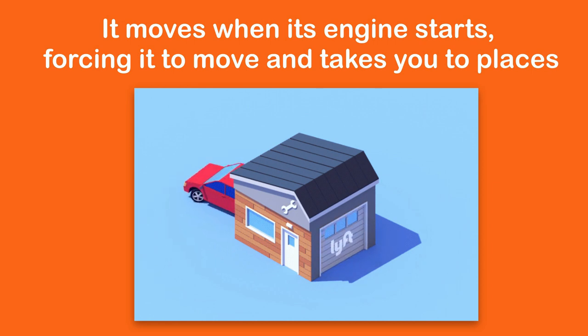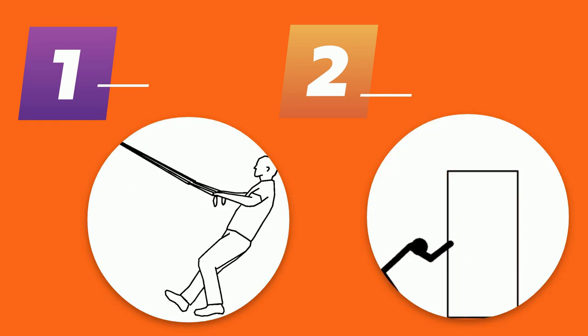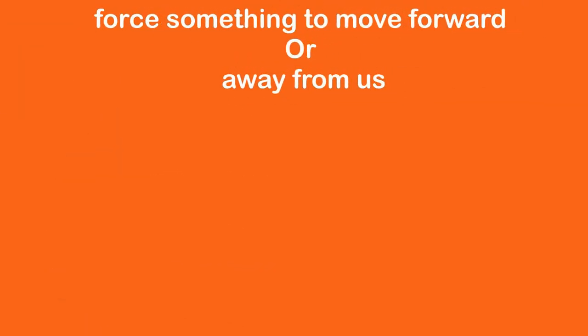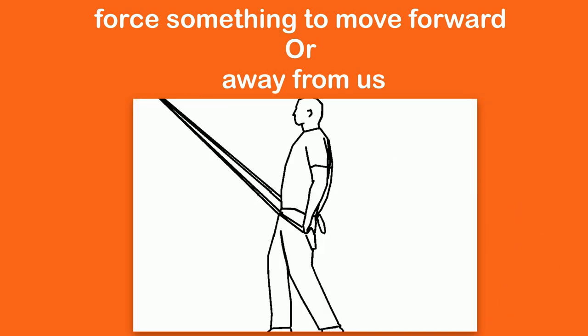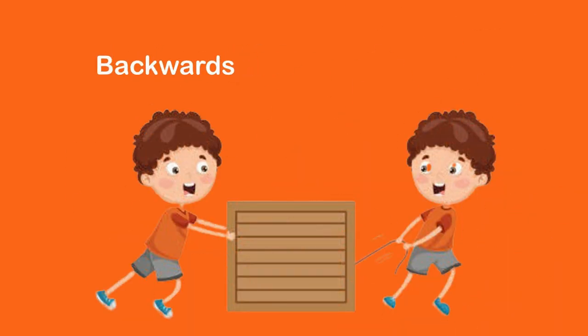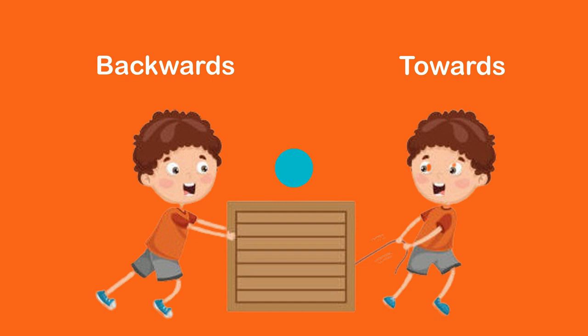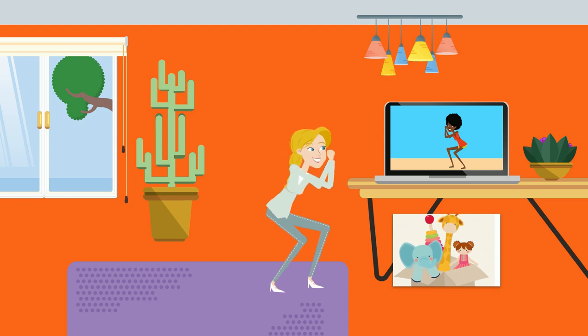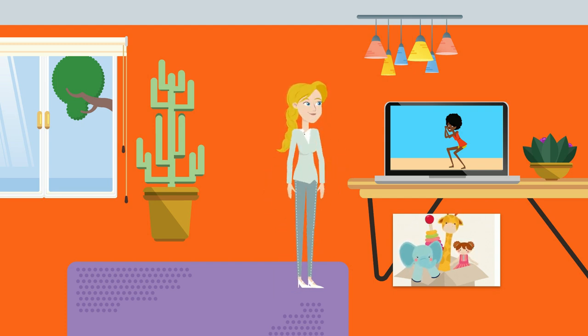Forcing it to move takes you to places. There are two types of forces: push and pull. When we force something to move forward or away from us, it means we are pushing it. For example, we push a bucket of toys under the table to keep them safe. And when we force something to move backwards or towards us, it means we are pulling it. For example, we pull the bucket of toys from under the table to get some toys from it.